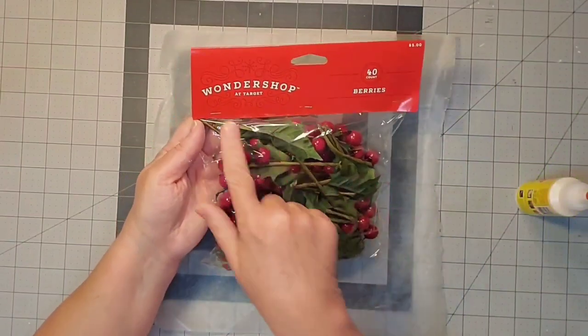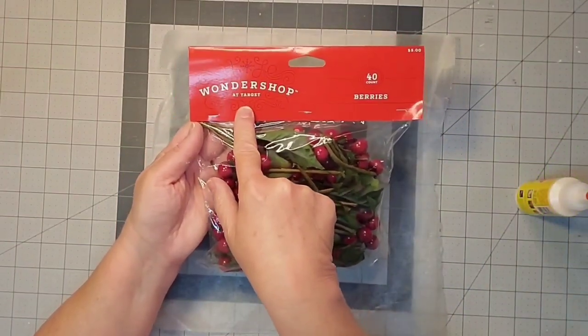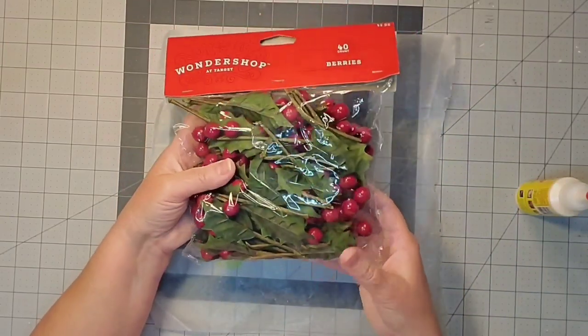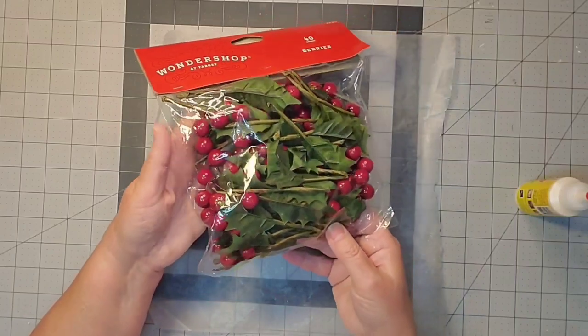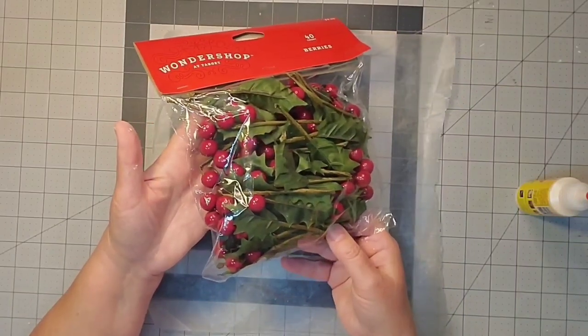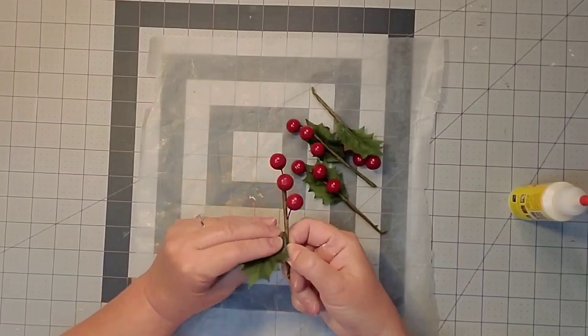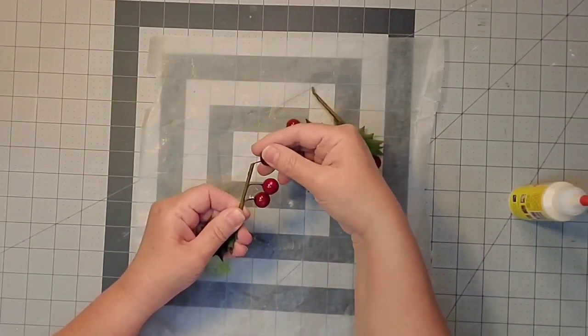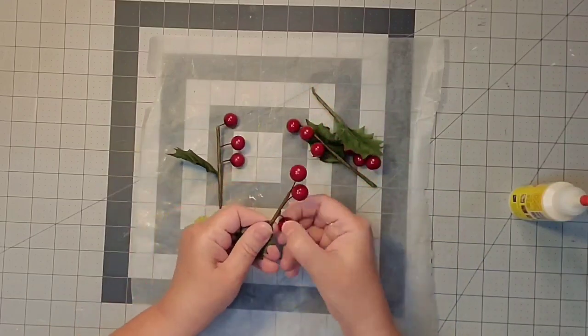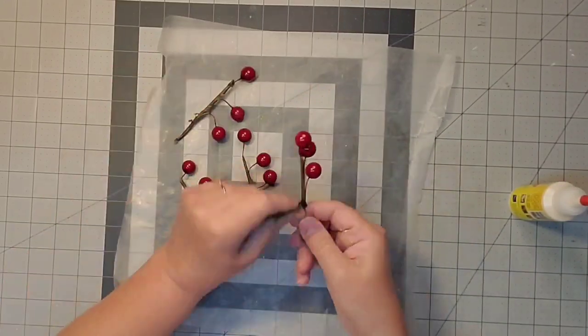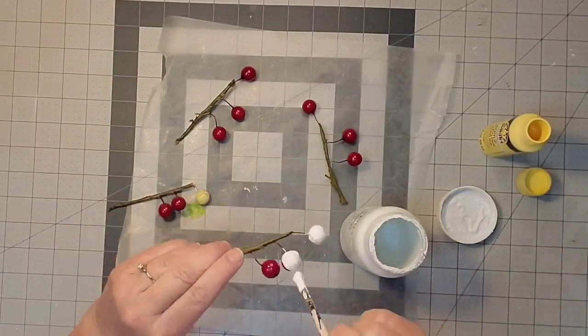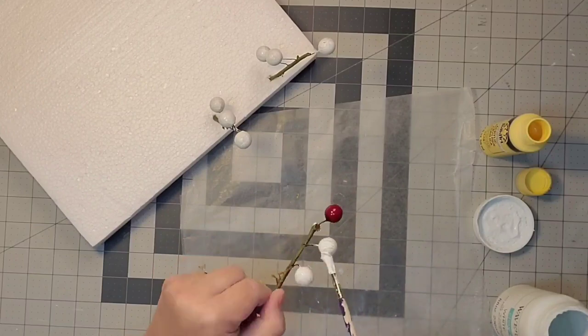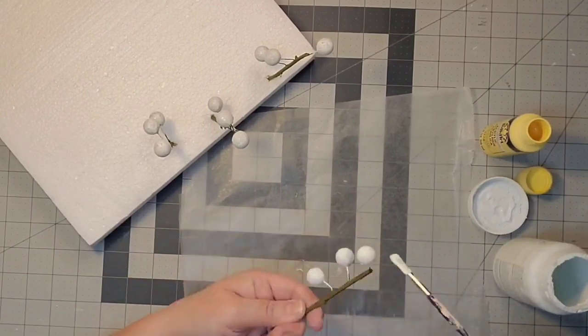I got these Christmas berries this past year at Target in the Dollar Spot for about $3. My idea is to turn these into miniature lemons. I ended up using four stalks, each with three berries. I'm opening up all the berries, pulling out the wires, and giving everything a good coat of white Waverly chalk paint.